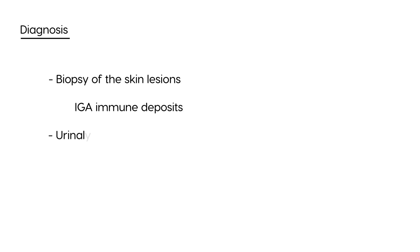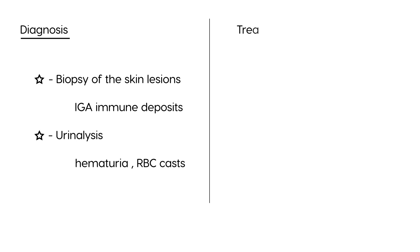For diagnosis, a biopsy of the skin lesions is needed, looking for IgA immune deposits — characteristic of the disease. Another important and simpler test is a urinalysis, which helps detect hematuria and RBC casts, which are a sign of glomerulonephritis.